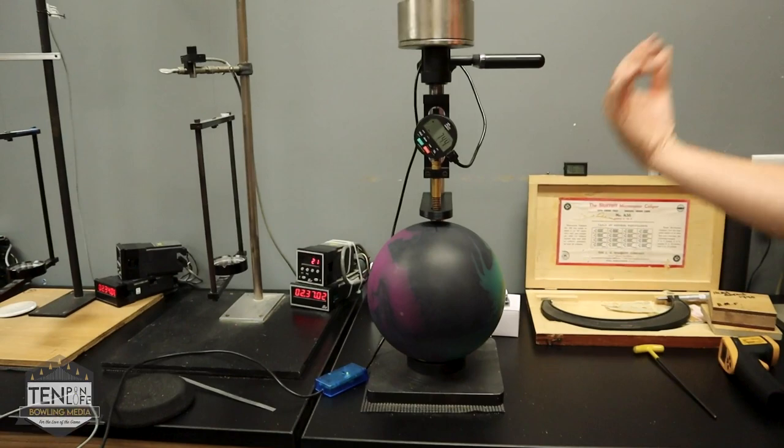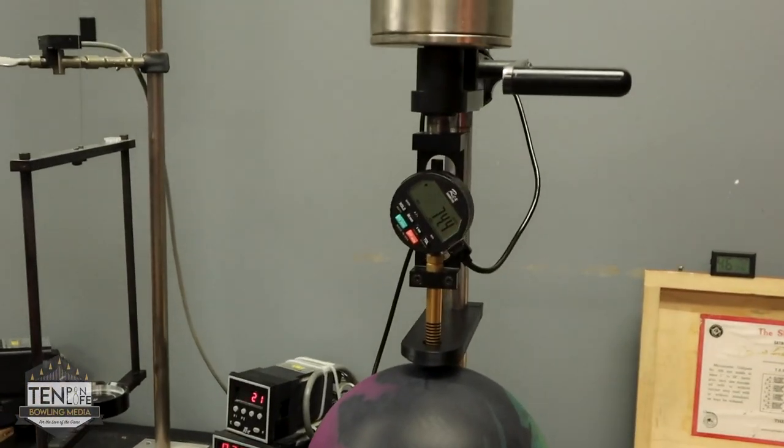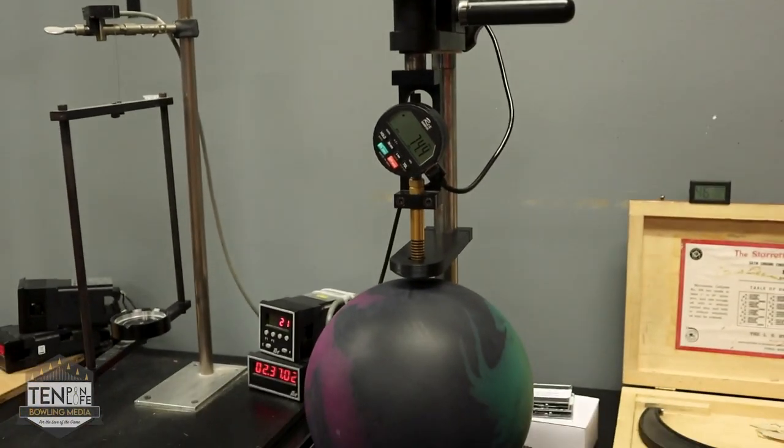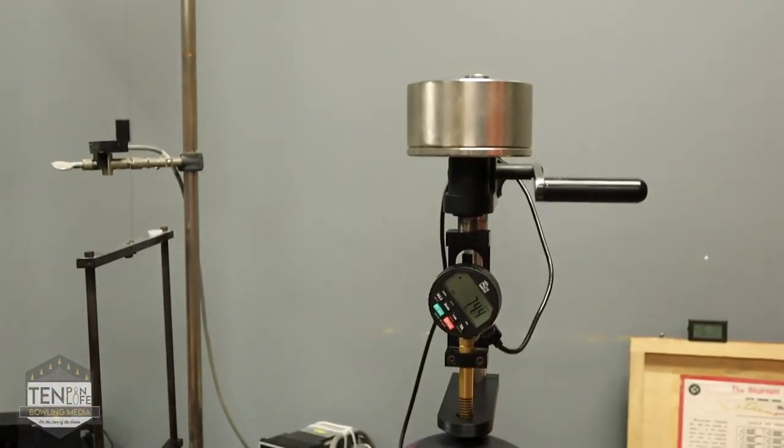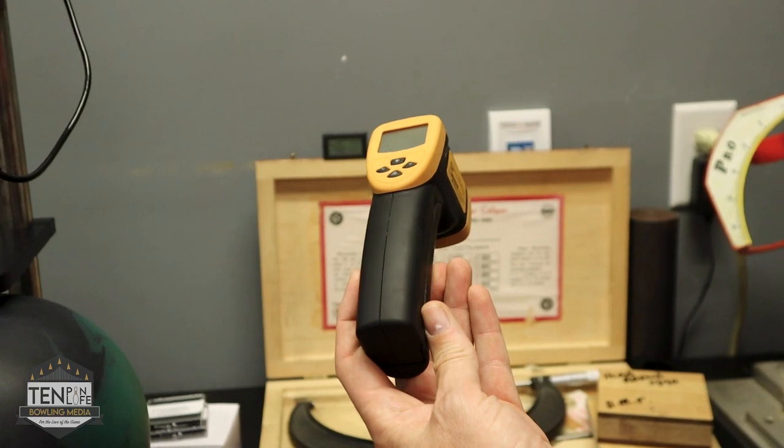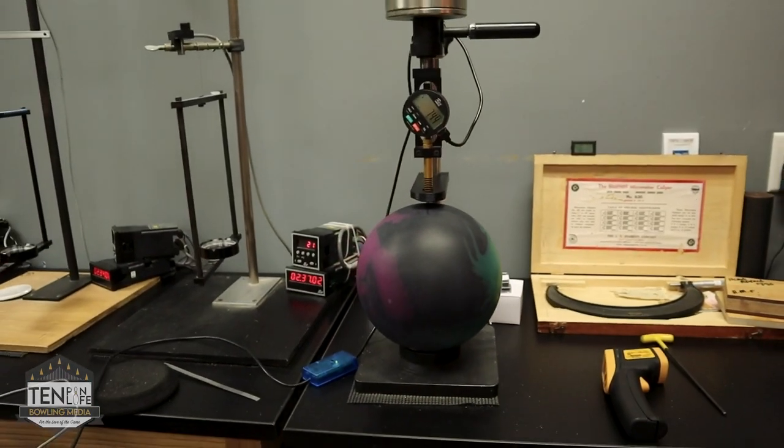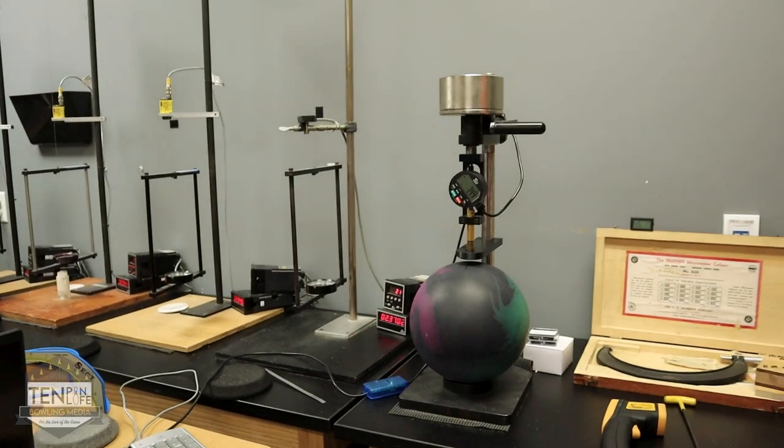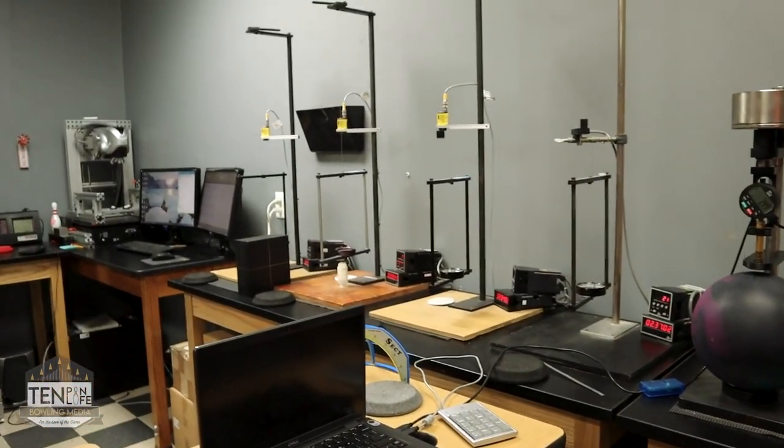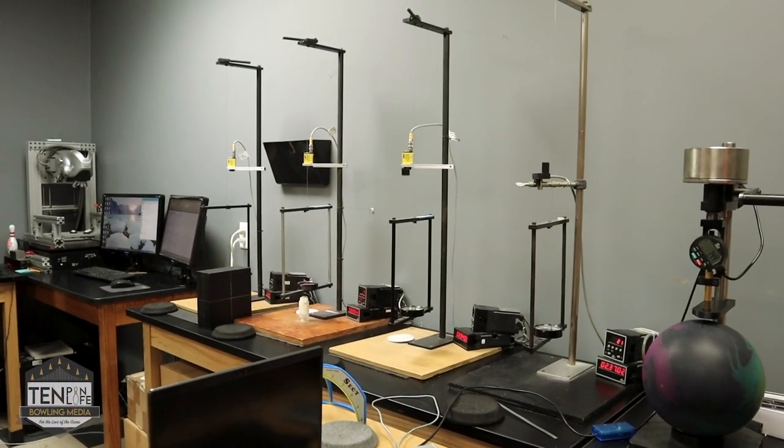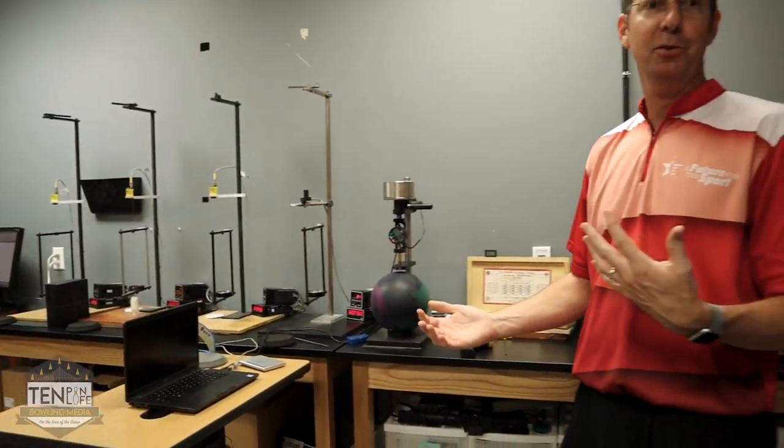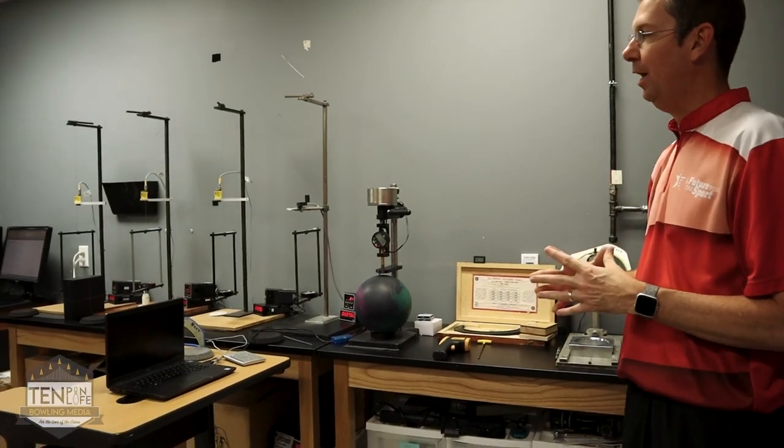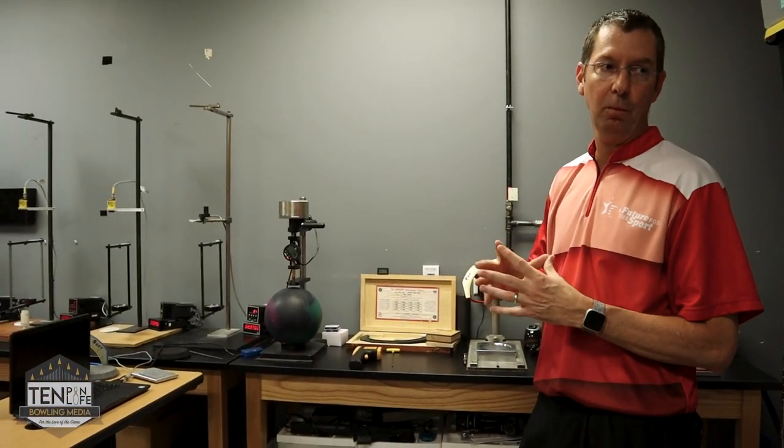We then come over here to our durometer. We use our durometer to check 10 spots around the ball. Those 10 spots we average and that gives you the hardness of the ball. Prior to doing the hardness we would check temperature with the temperature gun, just making sure they're within the range. That's why we leave them in here overnight to acclimate. And then go to our RG swings. This is where you get that low RG 2478, differentials 055, from the low and high RG axis of the ball.